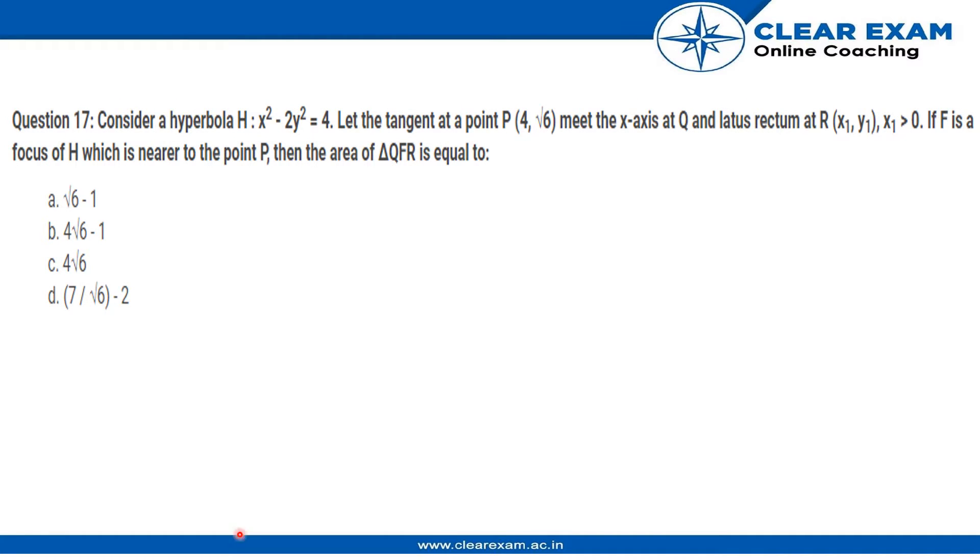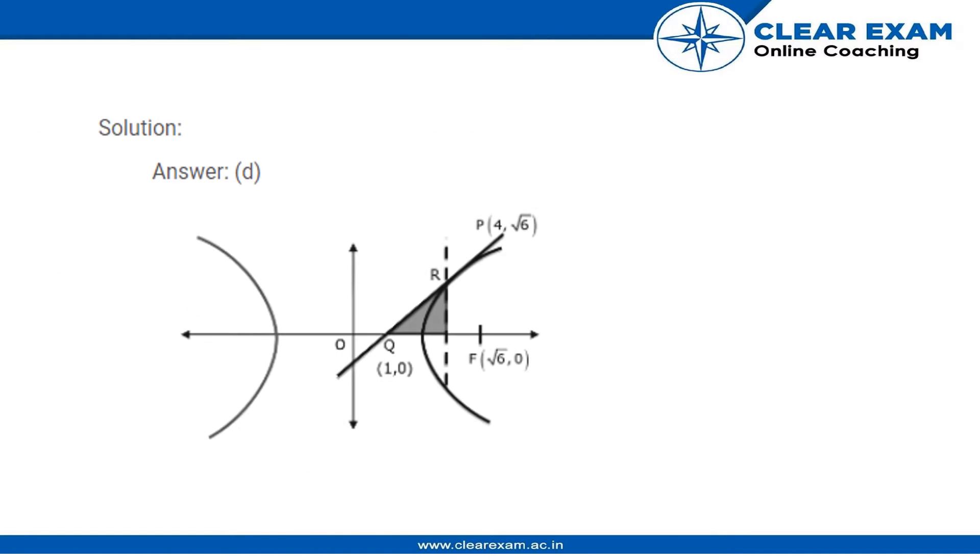Hello students, here is a question. We are given a hyperbola and tangent at a point P. The hyperbola meets the x-axis at Q and latus rectum at R with coordinates x₁, y₁ where x₁ is greater than zero, which means the point is in the positive x-axis. F is the focus of the hyperbola which is nearer to point P. Then the area of triangle QFR is to be found.